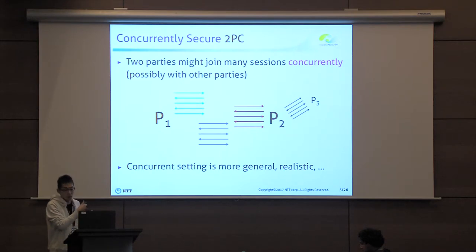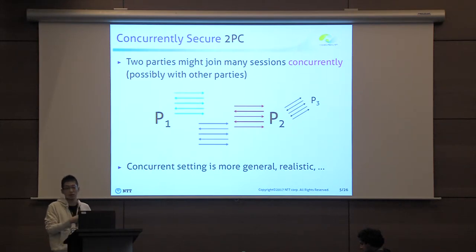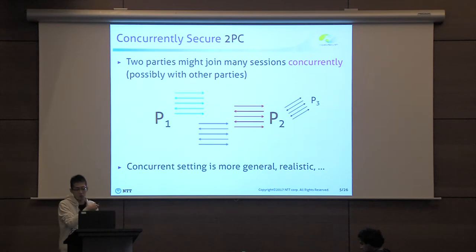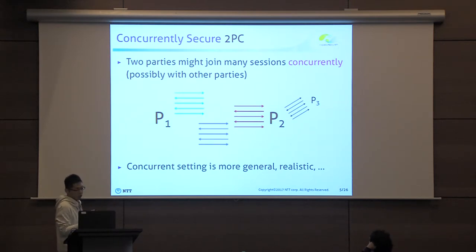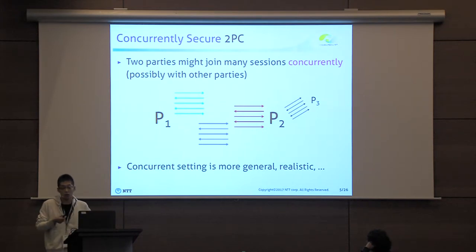For example, two parties P1 and P2 execute three sessions concurrently, and P2 also executes a session with another party P3. Concurrent security requires that the security holds even in this setting, and in particular, we require that the simulator exists even in this setting.